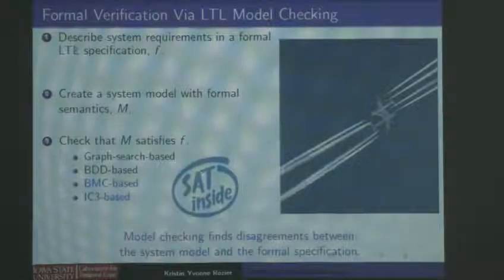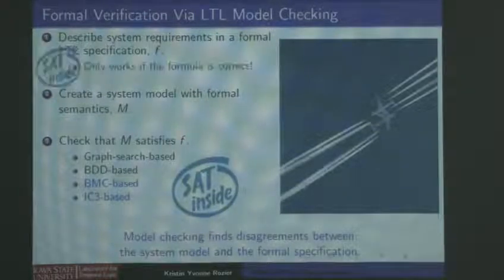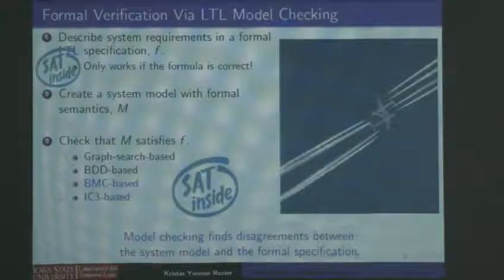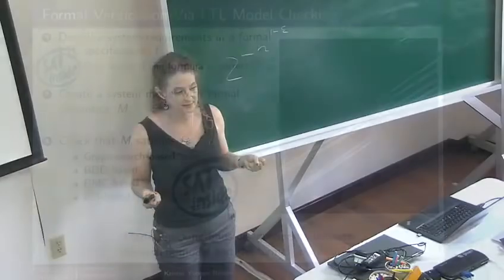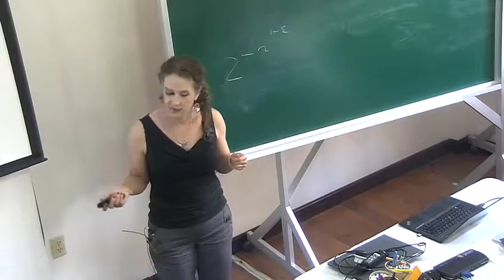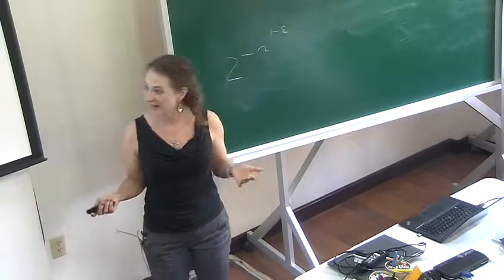There's SAT inside a lot of places here — direct calls to SAT solvers in the back-end check, especially in bounded model checking or the IC3 algorithm. There's also SAT up front, because this whole thing only works if your formula was correct. This is very garbage-in, garbage-out. If you put in a temporal logic formula F that doesn't make sense — if it's not satisfiable — you're not going to get anything meaningful out of the model checker. You might get something quite confusing.